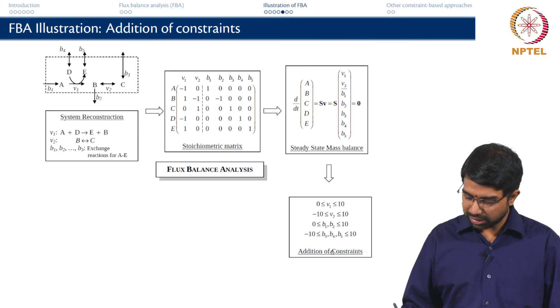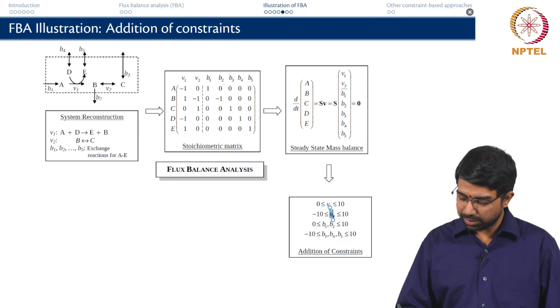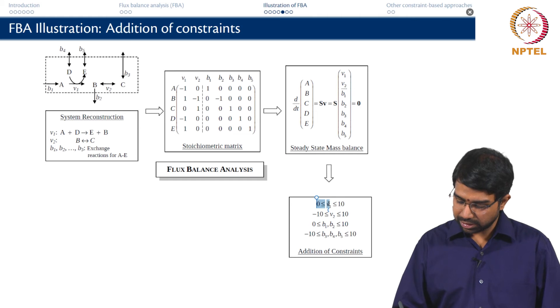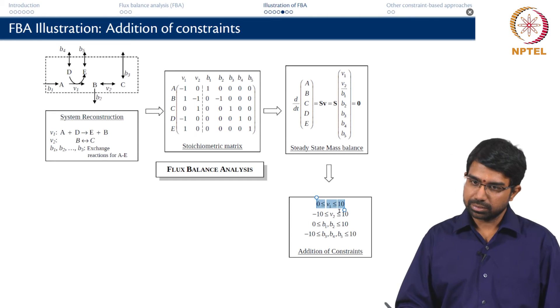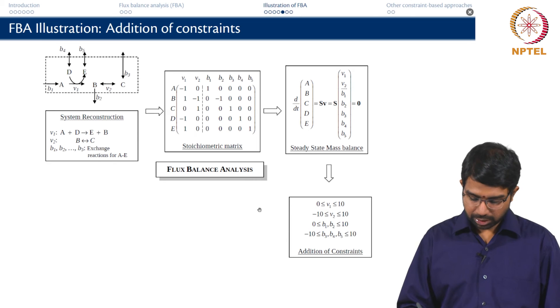So the next step, you put in other constraints from your knowledge of biology or whatever. Here I have put some toy constraints. I say 0 less than equals V1 less than equals 10, minus 10 less than equals V2 less than equals 10. So typically for any irreversible reaction, I would have the constraint in both directions but for the irreversible reaction, it is only in one direction.